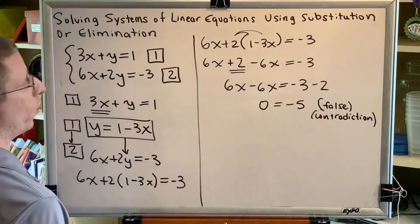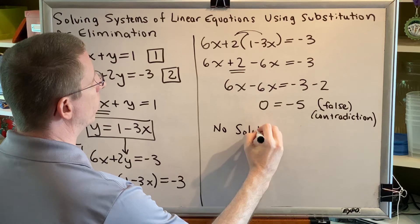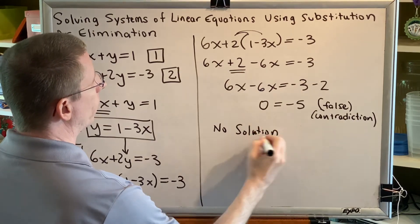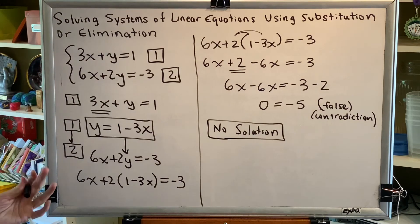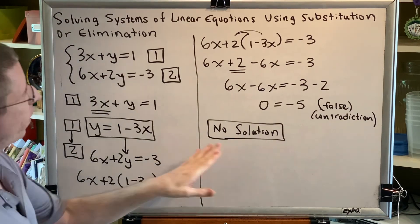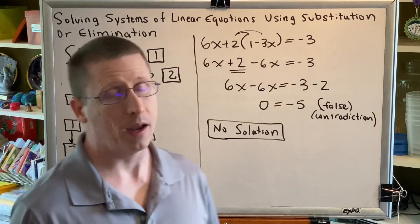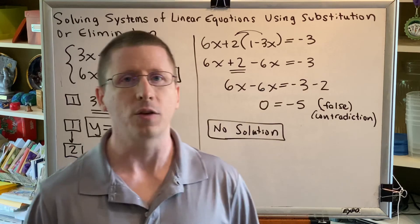Based on this result we conclude that there is no solution to this problem. If we were to graph both of these lines we would find that they are parallel lines that do not intersect. One of the great things about the final solution being no solution is it shortens your problem. There is no values for us to check.